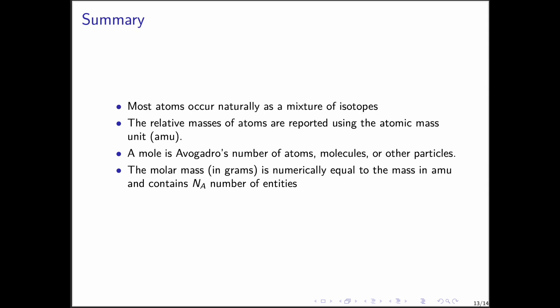Let's recap. Most elements exist naturally as mixtures of isotopes. The relative masses of atoms are expressed in atomic mass units based on carbon-12. A mole is Avogadro's number of particles. The molar mass in grams is numerically equal to the atomic or molecular mass in atomic mass units. And finally, percent composition lets us determine how much of each element is present in a compound.